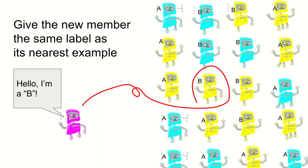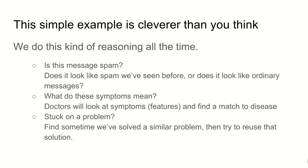And once we've decided which is the closest, you assign the label of that one that's the closest to the new data. And there you've got a new data point in your data set. So this gives us a new B robot in our data set. This example is quite straightforward, but it's also cleverer than you think. And we do this kind of reasoning ourselves all the time.